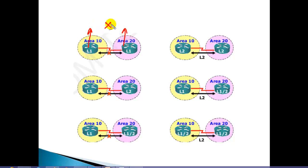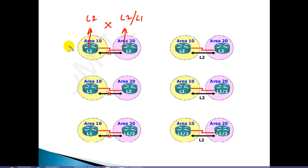Now, if you have one router configured as Level 1 and another as Level 1, but they are in different areas, they will not form the neighborship. In order to exchange routes between two different areas, the router must be either Level 2/Level 2 or Level 2/Level 1/Level 2. So an L1-only scenario will not work for different areas.